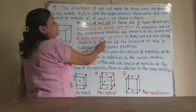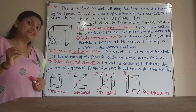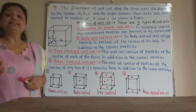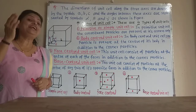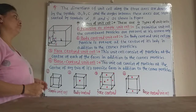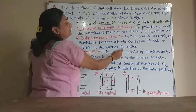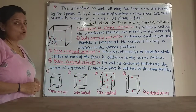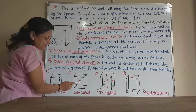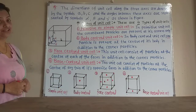The second type is the body-centered unit cell. As the name suggests, there is one particle present at the center of the body of the unit cell, and in addition to that, there are particles at the eight corners as well. So in the body-centered unit cell, one particle is present at the center of its body in addition to the corner particles.